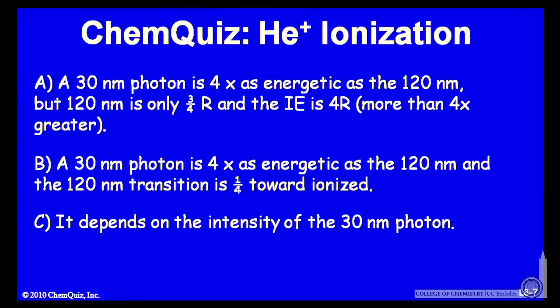So let's look at arguments for each of the possible answers. A, a 30-nanometer photon is four times as energetic as 120. But 120 is only 3 quarters R, and the ionization energy is 4 R.